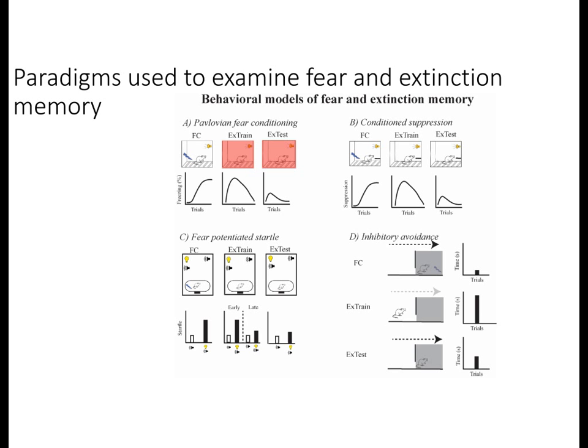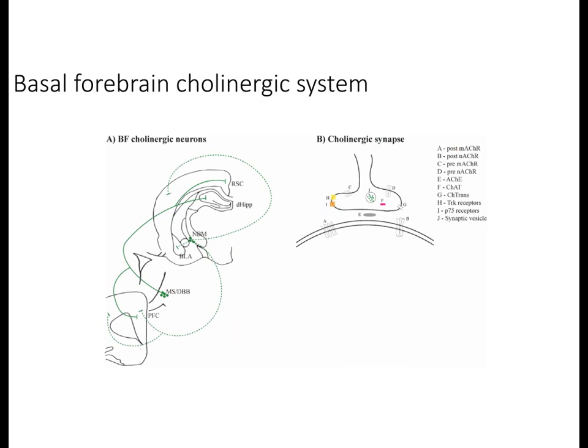It's often assumed that the fear and extinction circuitry in these paradigms are the same, the only difference being what neural substrate mediates the output of the behavior. However, upon reviewing the role of basal forebrain cholinergic neurons, it appears that the circuitry mediating fear and extinction memory can sometimes differ — cholinergic neurons are really important in some paradigms, not important in others, and have different roles in yet other paradigms.